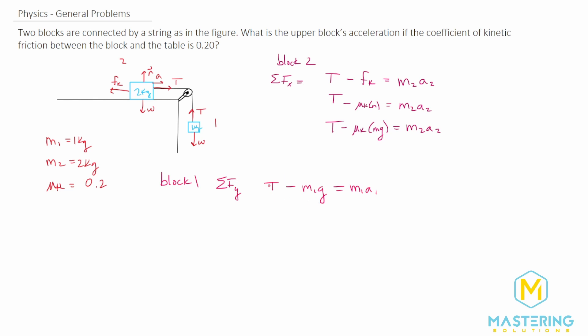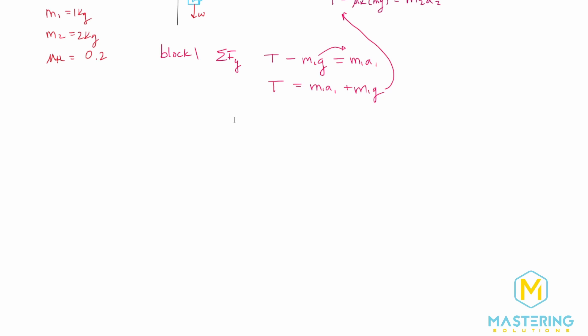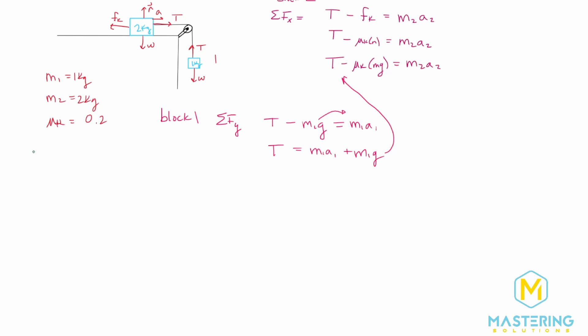So now let's solve for T so we'll add over the m1 g. So we have T is equal to m1 times acceleration one plus m1 times gravity. So now we have this solved for tension so let's plug this in to the block two equation. We'll need some more space so let's come down here and I'm going to rewrite this equation first just so we can see it and have more room.